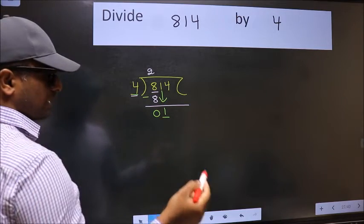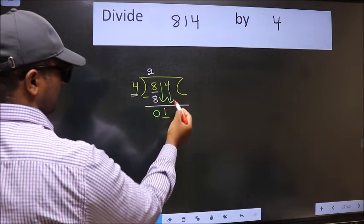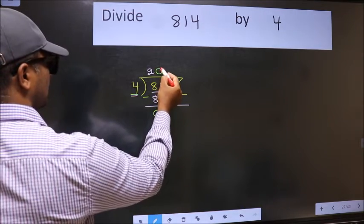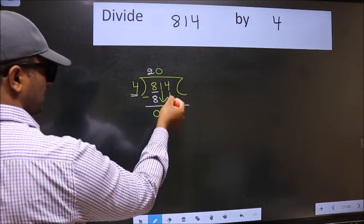So we should bring down the second number. And the rule to bring down the second number is we should put 0 here. Then only we can bring this number down.